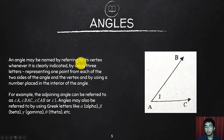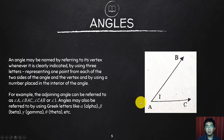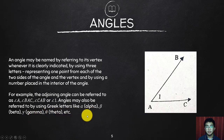An angle may be named by referring to its vertex, by using three letters representing one point from each of the two sides and the vertex, or by using a number placed in the interior of the angle. For example, an angle can be referred to as angle A (the vertex), angle BAC, angle CAB, or angle 1. Angles may also be referred to using Greek letters like alpha, beta, gamma, or theta.